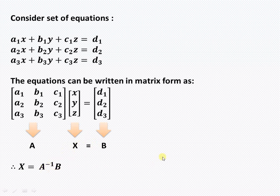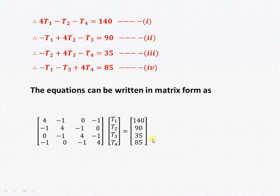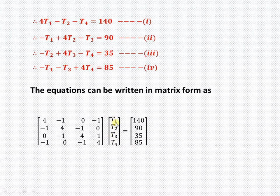Our four equations can be written in matrix form. The coefficient matrix A is: [4, -1, 0, -1; -1, 4, -1, 0; ...] and so on for each row, since some terms like T3 have a coefficient of zero. The variable matrix contains T1, T2, T3, T4, and the constant matrix B contains 140, 90, 35, and 85.